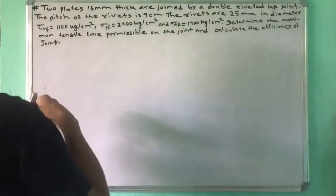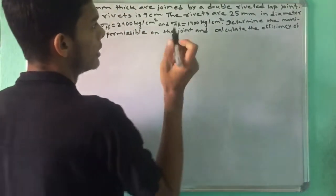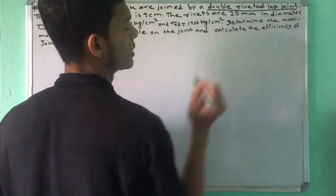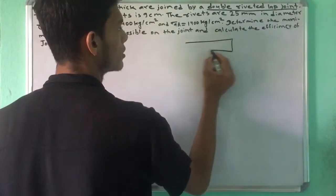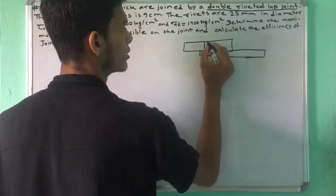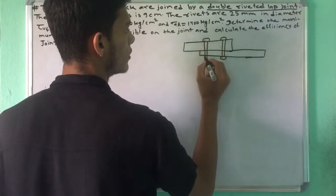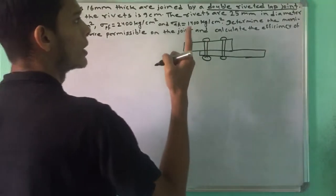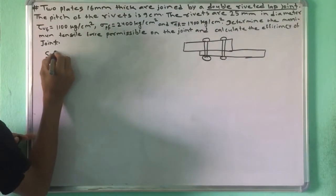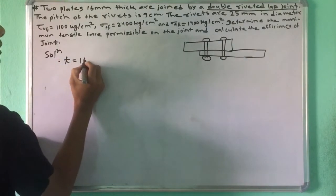Now, what do you do? First, we have two plates of 16 mm thickness. This is a Double Riveted Lap joint. P is 9 cm. We will take the thickness of the plate T equal to 16 mm.